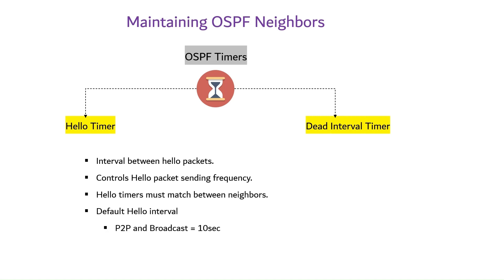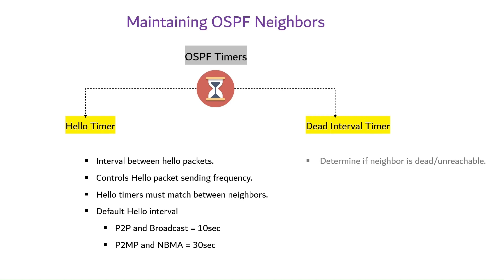By default, the hello interval on point-to-point and broadcast network interfaces is 10 seconds, whereas the hello interval on point-to-multipoint and non-broadcast multi-access interfaces is 30 seconds.